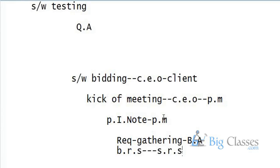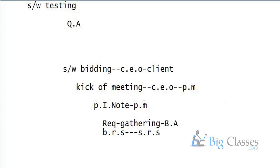Once the initiation note is baselined, the business analyst goes to the client site and gathers requirements. With those requirements, the business analyst creates two documents: BRS and SRS. BRS is the total requirements from the client — it's rough work. From the BRS, the SRS document is created to give developers and testers clear, detailed information about the requirements.